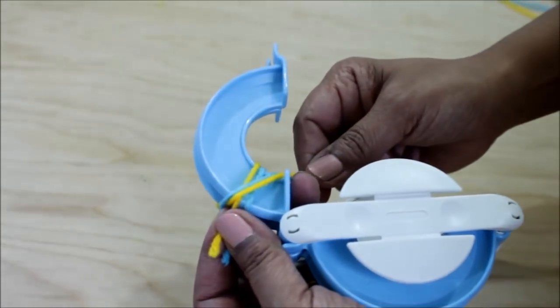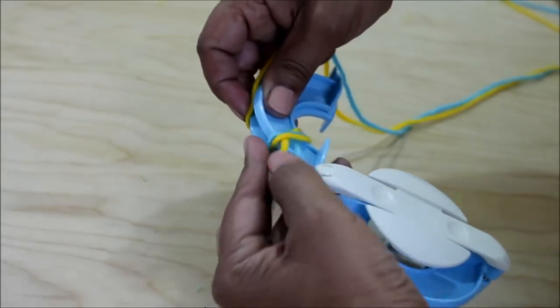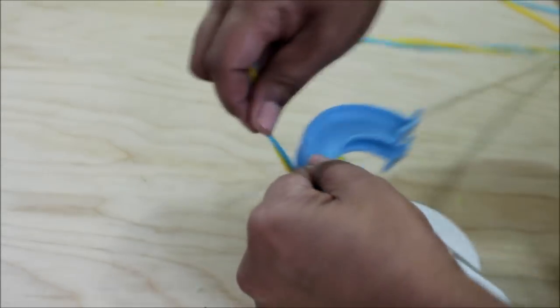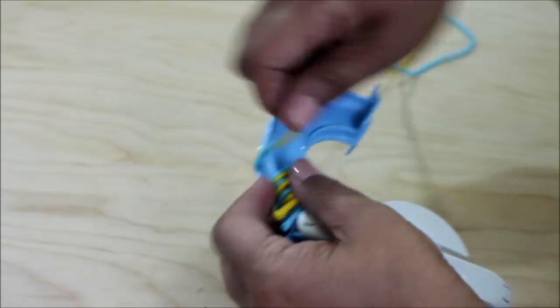I overlap the first loops only so that my yarn is secure and then I start pushing back and then I start wrapping.